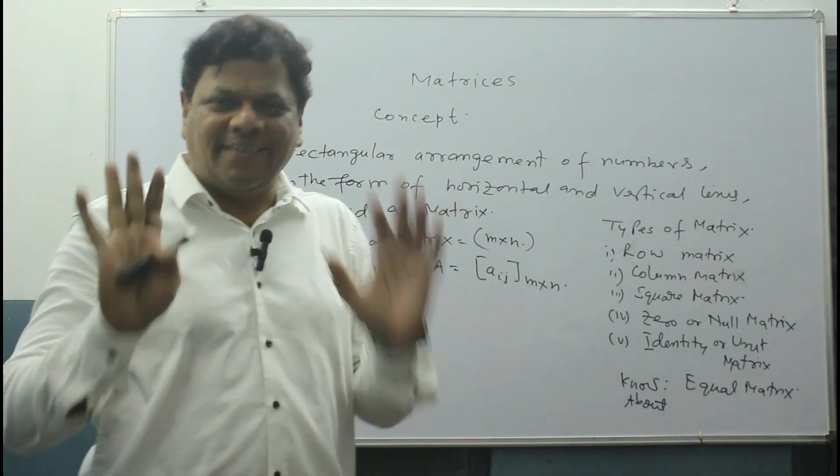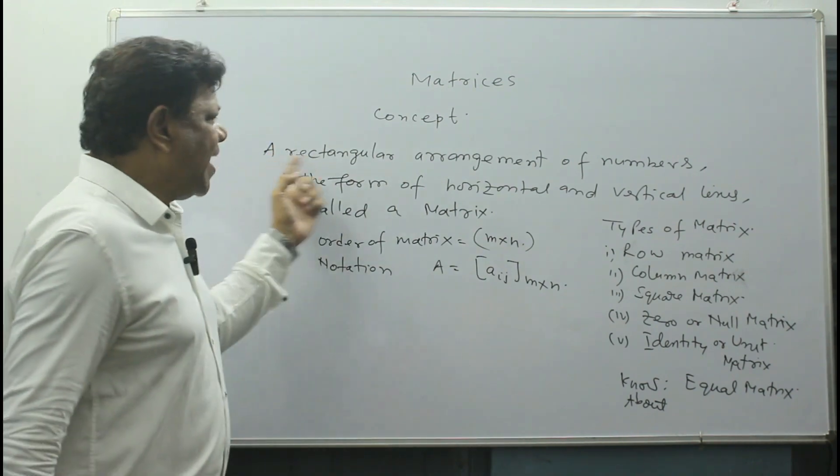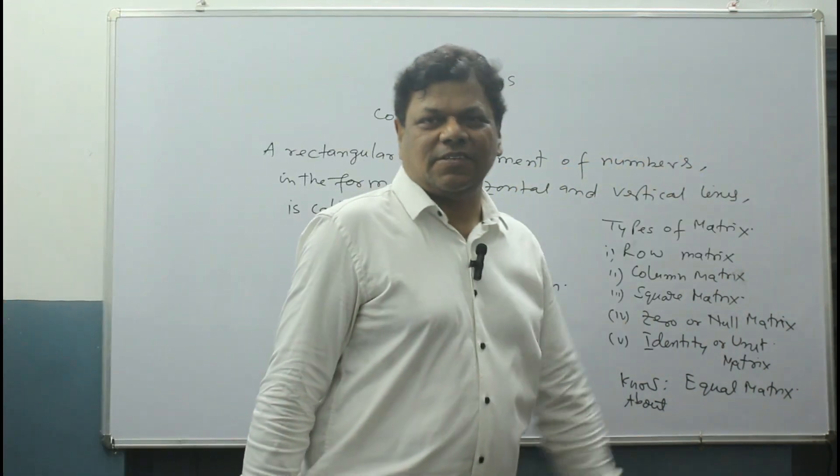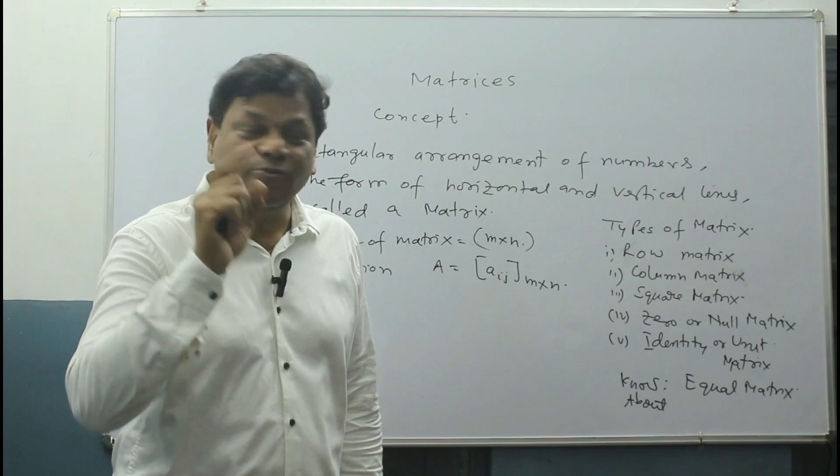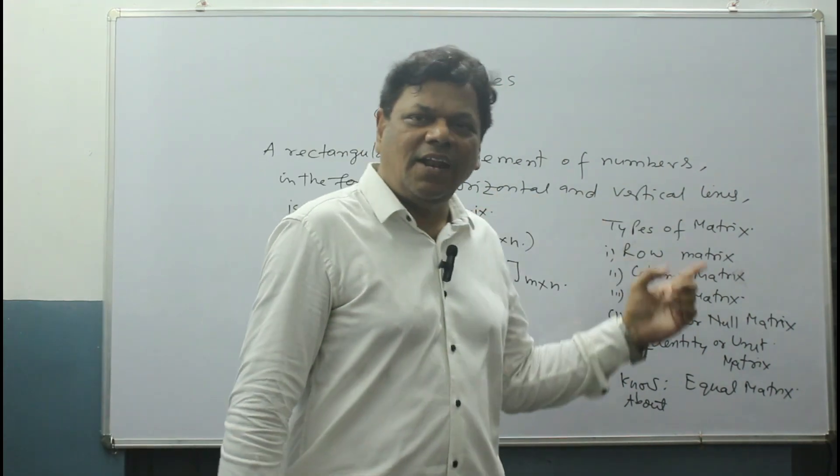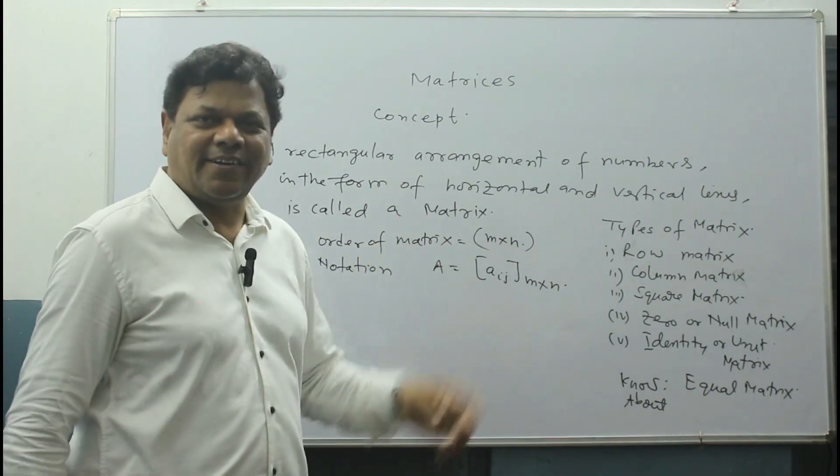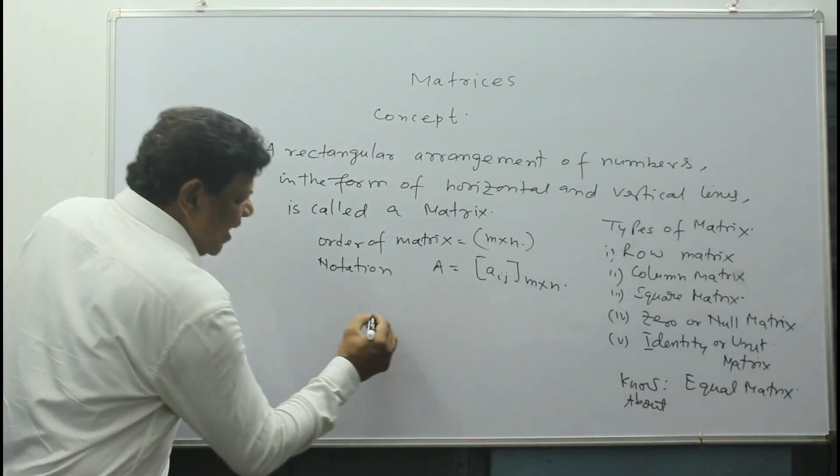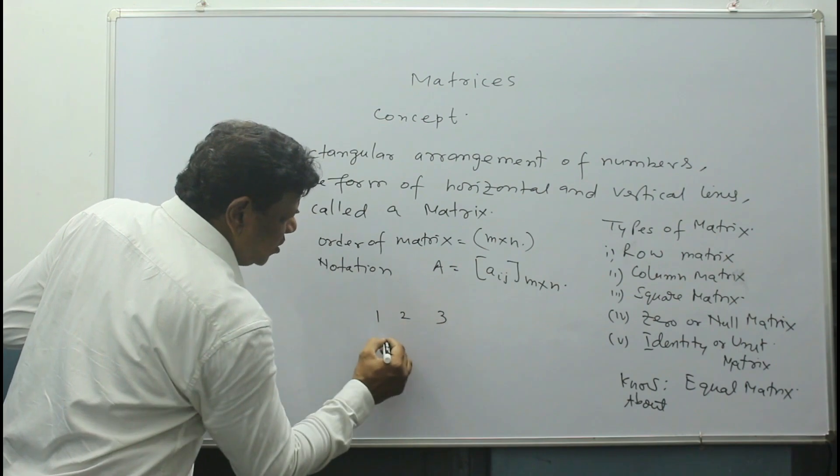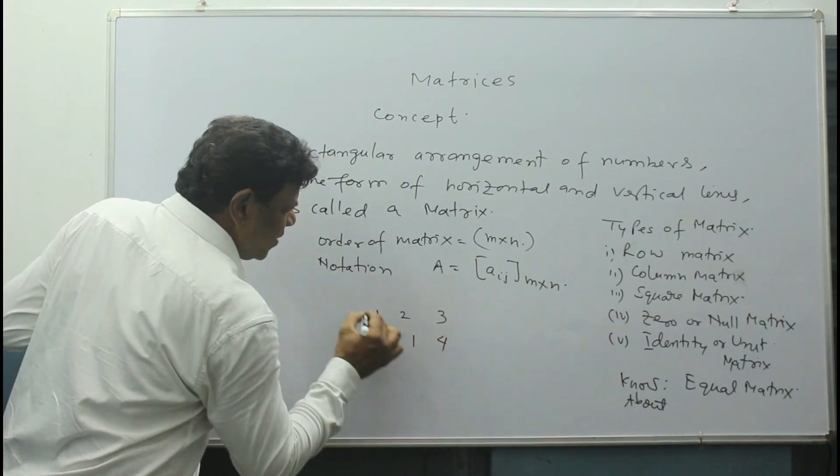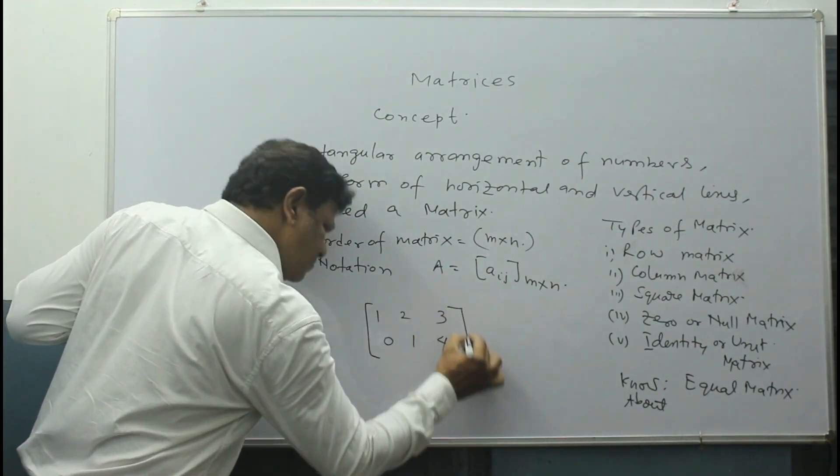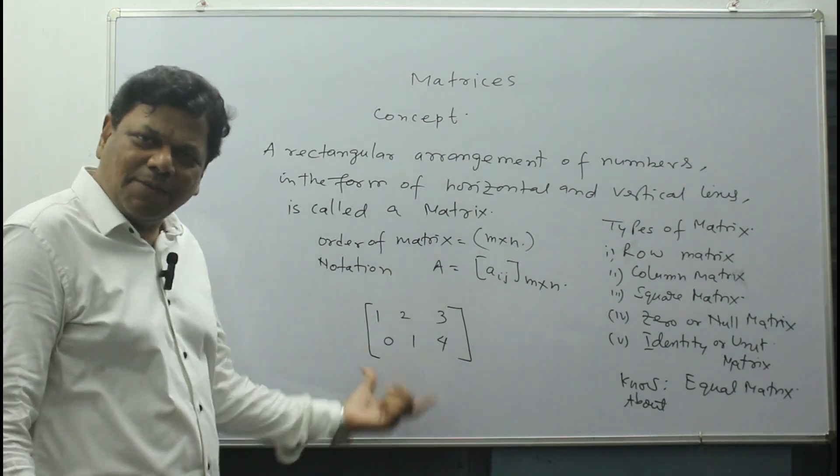Now see, what is a matrix? A rectangular arrangement of numbers in the form of horizontal and vertical lines is called a matrix. Now see what I have done here: 1, 2, 3, 0, 1, 4. I have given it in third bracket. So this is the matrix.